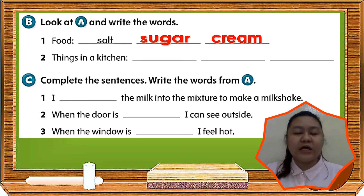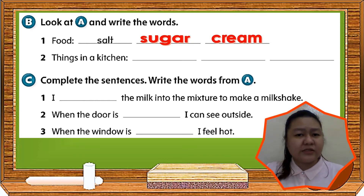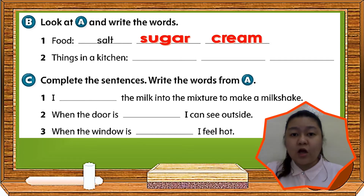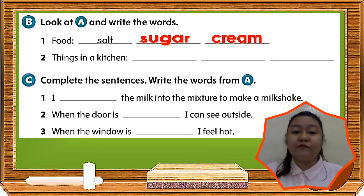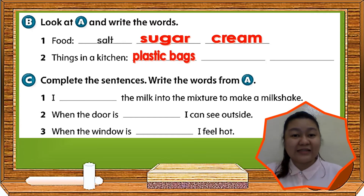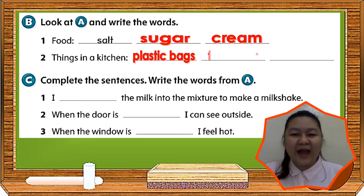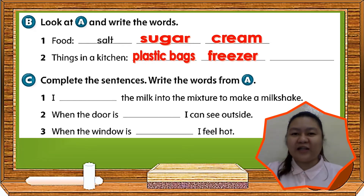Now for number 2: Things in the kitchen. If you noticed, reading the words in the vocabulary, we only have 2 things that we can find in our kitchen. What are the 2 things? Correct — plastic bags. The next one is freezer. That's right. Leave the third blank empty.